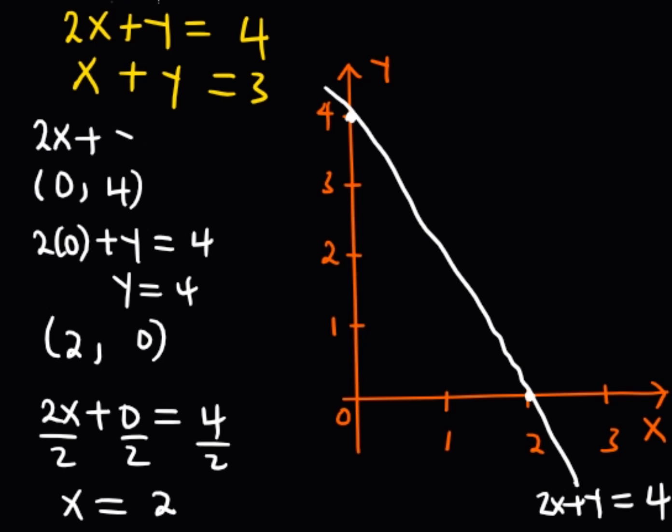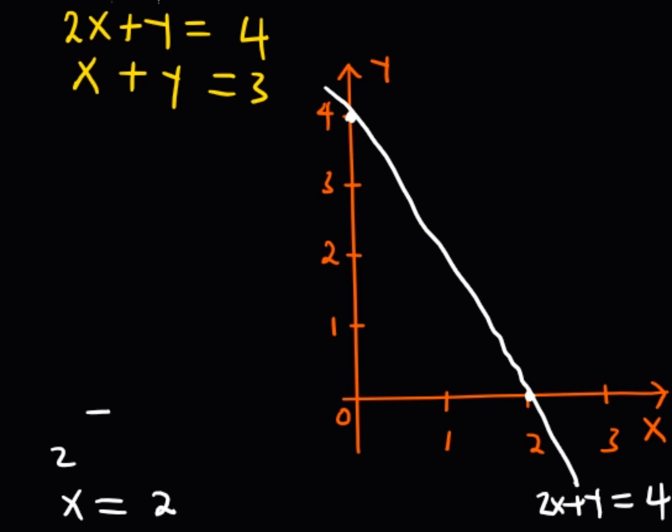Now, I'm going to graph the second equation, x + y = 3. I need to get the value of y when x is 0. Substituting: 0 + y = 3, so y = 3. This gives us the point (0, 3).